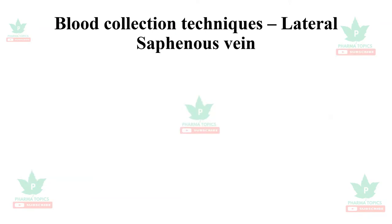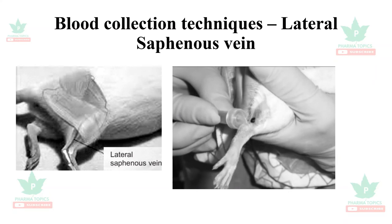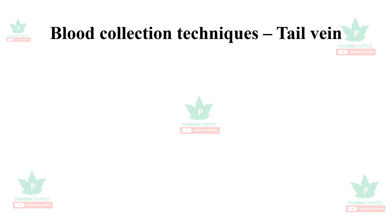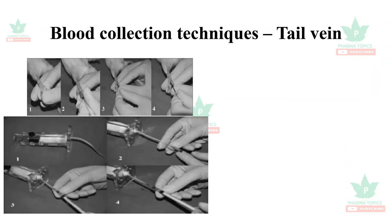The lateral saphenous vein is another blood collection site; the vein passes near the femoral region and blood can be collected from it. The tail vein is very widely used for blood collection in rats and mice. Animals are placed in a rat or mice holder, the vein is visible in the tail, and blood is collected from it.